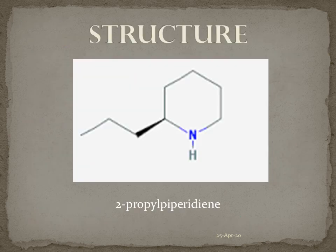Based on the above four reactions, this is the structure of conine. The IUPAC name of conine is 2-propyl piperidine.